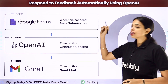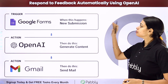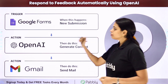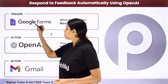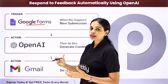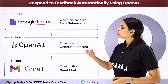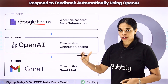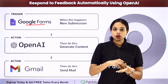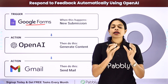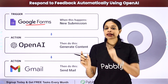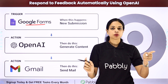In this video we are going to see how to respond to feedbacks automatically using OpenAI. So every time there is a form submission — here we have taken the example of a Google Form, though you can choose any form builder application — every time a new form submission is received and you have received a feedback, you want a response to be automatically generated and a mail sent to the person.